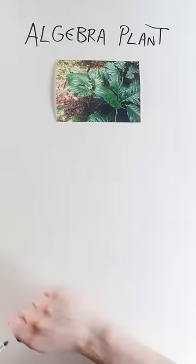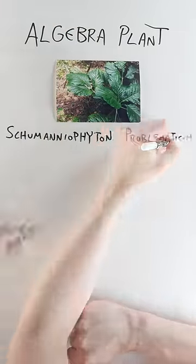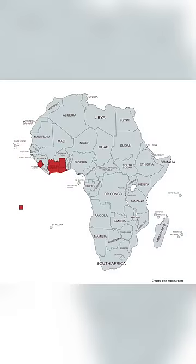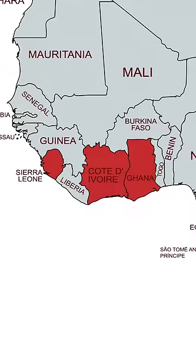Say hello to the algebra plant, Schemeniophyton problematicum. It's in the coffee family and it's found in West Africa, specifically Ghana, Sierra Leone and Ivory Coast.